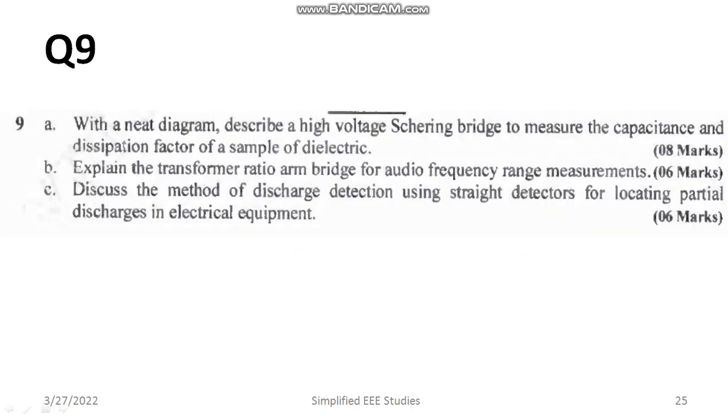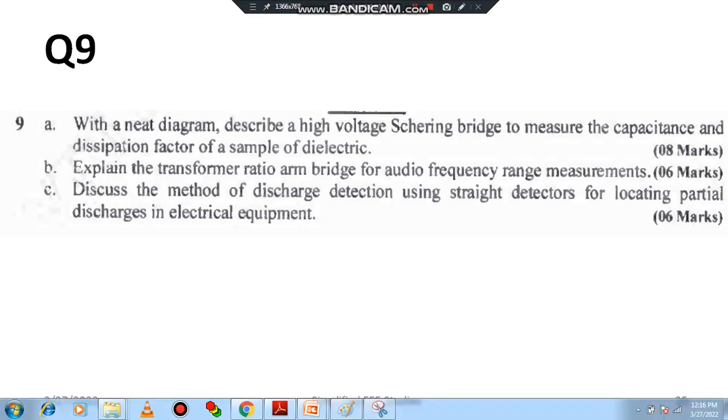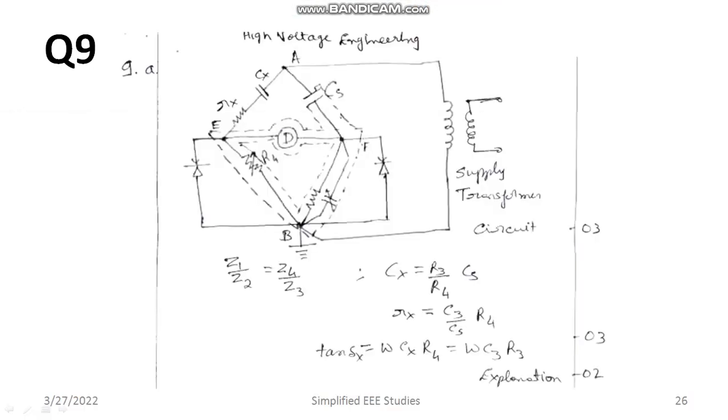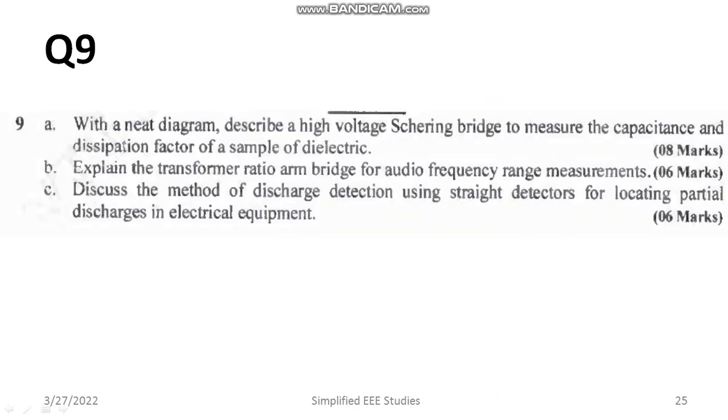Question number 9: With a neat diagram, describe the high voltage Schering bridge to measure capacitance and dissipation factor of the dielectric. Draw the bridge, you will get three marks. Balance the bridge and calculate Cx and Rx, you will get another three marks. Finally, derive the expression for dissipation factor or dielectric loss tan delta x. You will be getting two marks. Like that marks will be divided.